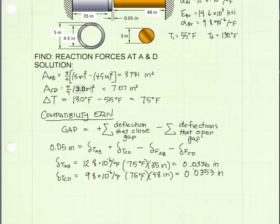For member CD, I can also calculate the thermal deflections using the same equation and the values of coefficient of thermal expansion for brass and the original length. If I added those two thermal expansions together, that would be greater than the gap dimension of 0.05 inches, which means that the gap truly will close when the temperature increases 75 degrees Fahrenheit.